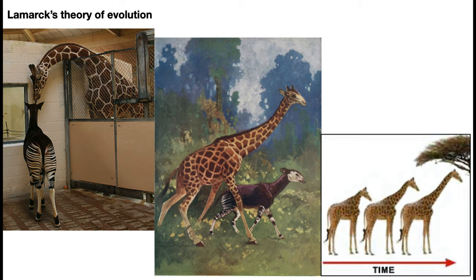The disuse part: if you stop using particular parts of your body for particular functions, they're going to atrophy back to their ancestral beginning condition. The other big idea was called the Heritability of Acquired Characteristics — characteristics acquired during your lifetime through effort would be passed down to your children and to their children.